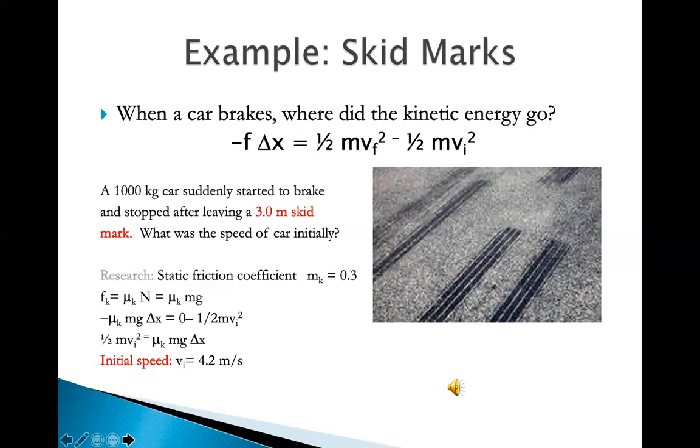So let's look at some specific numbers. If a 1,000-kilogram car suddenly started to brake and stopped after leaving a 3-meter skid mark, what was the speed of the car initially? So you can see the skid mark can be used to figure out the speed before the car started braking. If you do some research, we can find the static friction coefficient on the road is close to 0.3. So the kinetic friction equals the kinetic friction coefficient multiplied by the normal force. The normal force in this case equals to the weight, or mg.